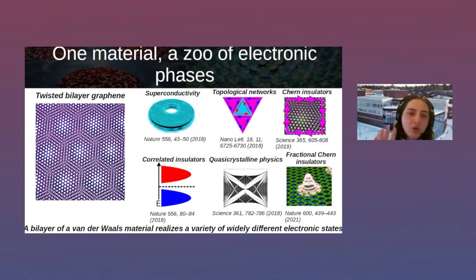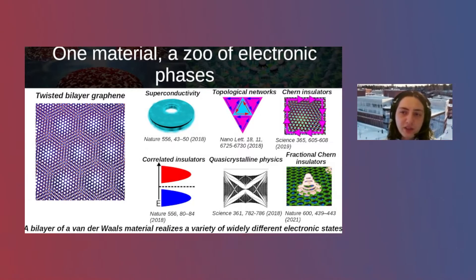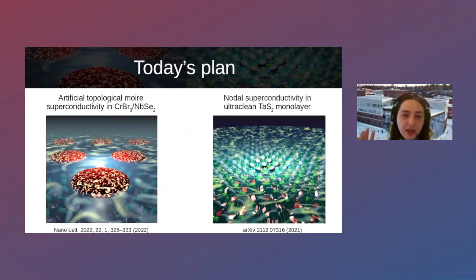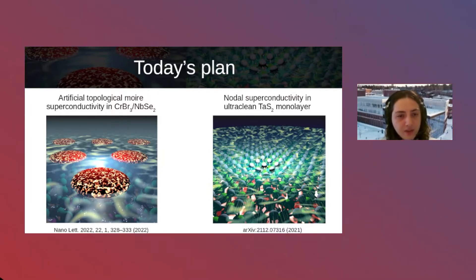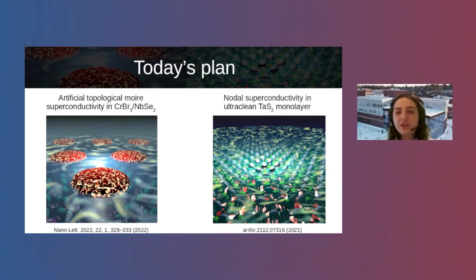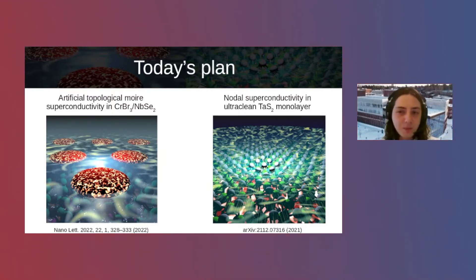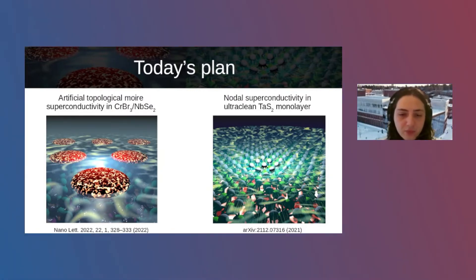If we now focus on superconducting-based van der Waals materials, we can imagine having a huge degree of freedom that will allow us to see superconducting states that are very challenging to see in other compounds. That is essentially the idea for the experiments I'll describe today. I'll first talk about topological superconductivity in a CrBr₃/NbSe₂ heterostructure, and second about driving a 2D material that is in principle a conventional superconductor into the nodal superconducting regime.